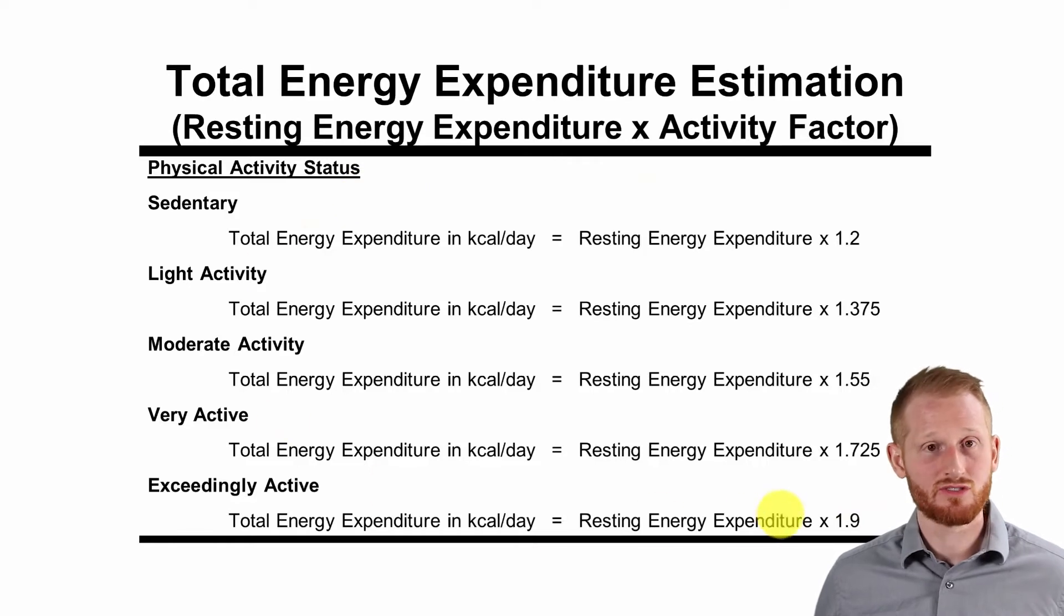These activity factors are very common. If you look online, if you look in various textbook sources, you're going to see most likely these numbers or something very similar to these numbers. The names may change a little bit here or there. The description of what fits under each category is probably going to change a little bit here or there. But these, again, are pretty common activity factors to use.